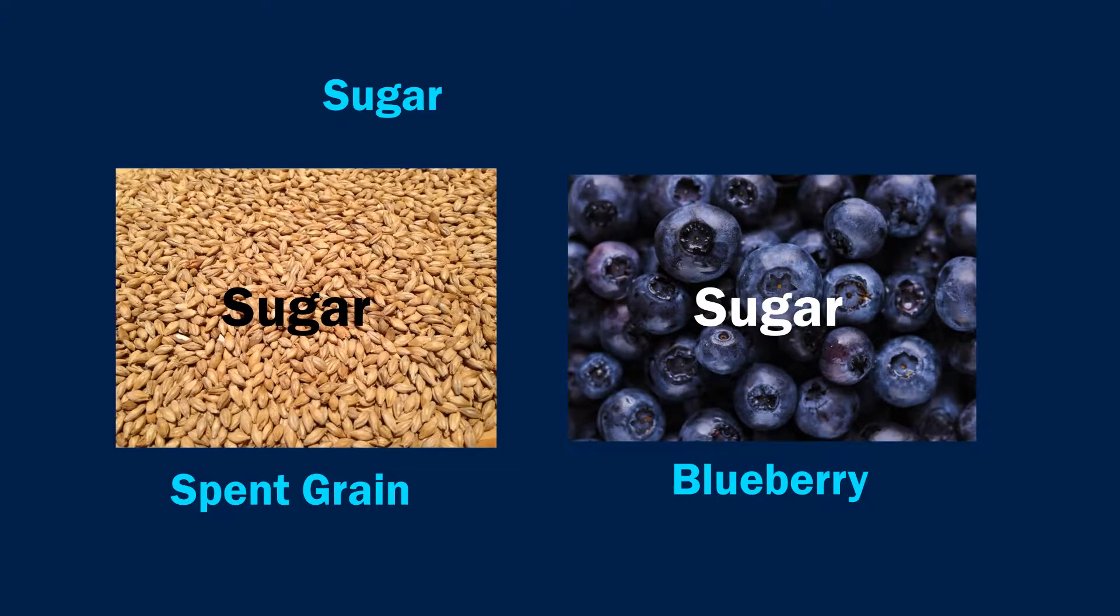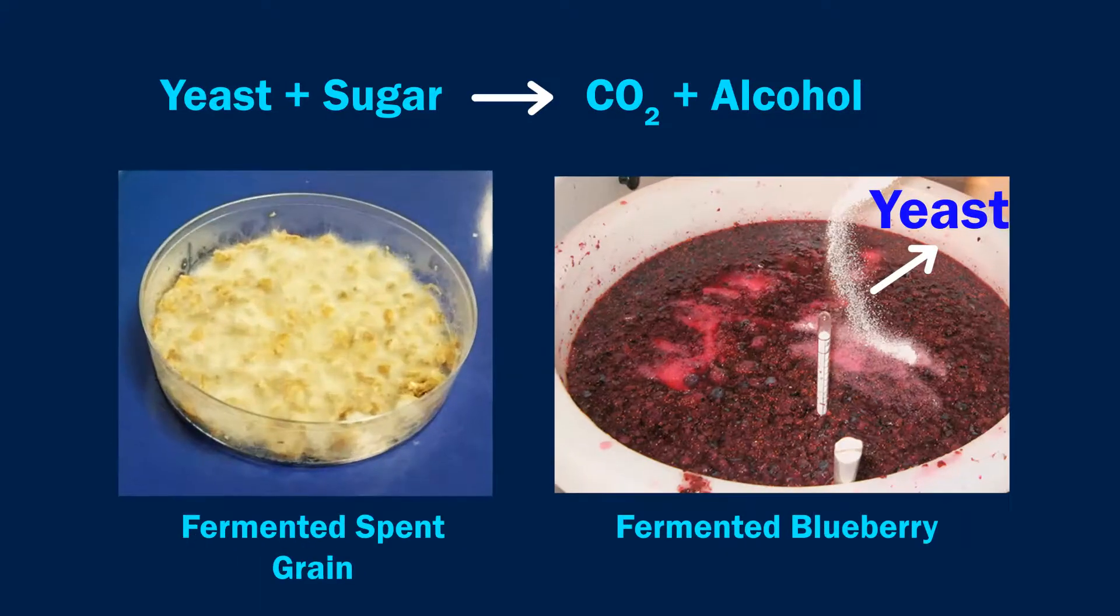3. Fermentation. Conversion of sugar in grains and fruits to alcohol and carbon dioxide is called fermentation. Yeast and some bacteria are used for fermentation.